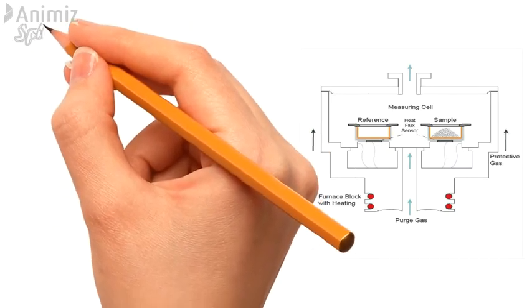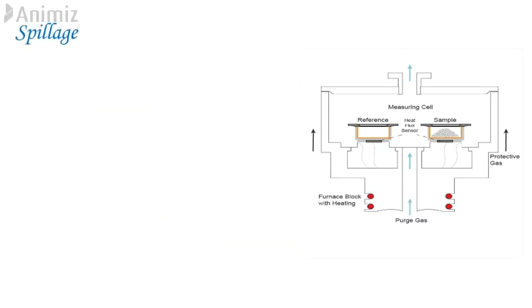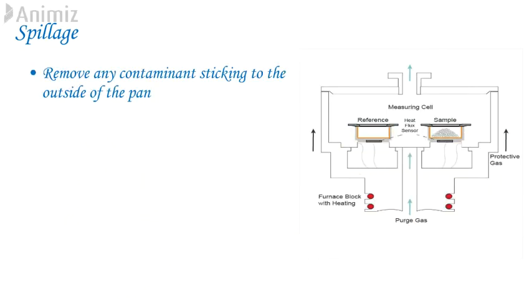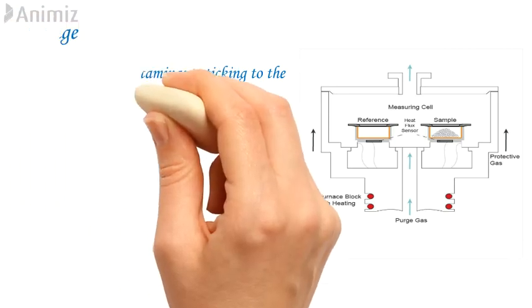9. Spillage. A frequent cause of contamination is from sample attaching to the outside of the pan. Check and remove any contaminant sticking to outside of the pan, particularly at the base of the pan.